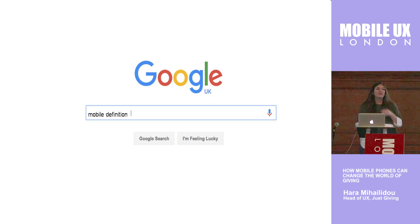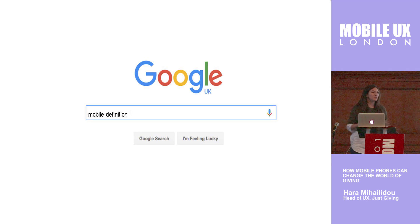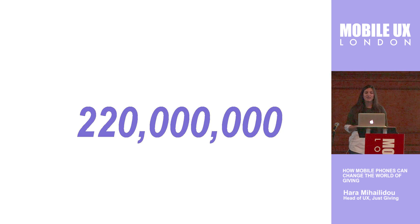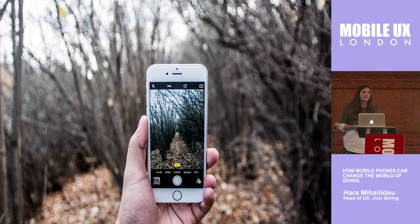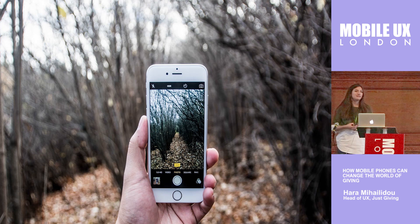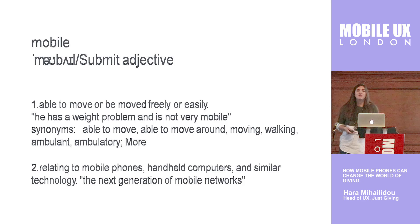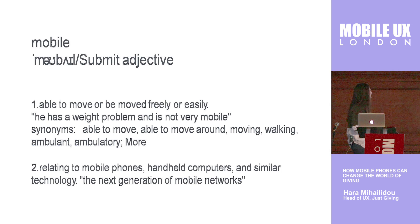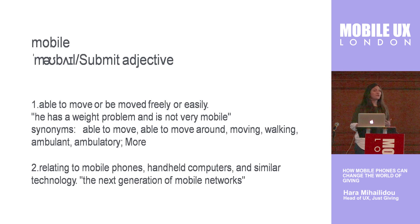I started with a very basic search, and I typed the word 'mobile definition'. I found 220 million results. All the references and the visual cues at Google today showcase the mobile device when we talk about mobile. But the actual definition shows that mobile is actually an adjective, and it means we are able to move or be moved freely and easily. And secondly, it's about technology.